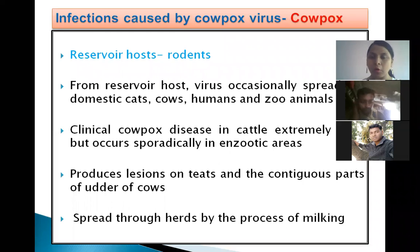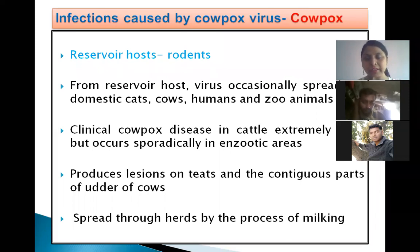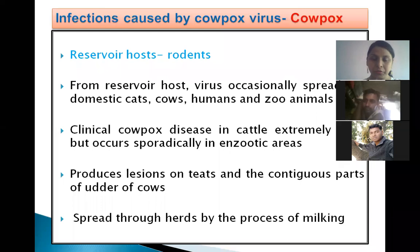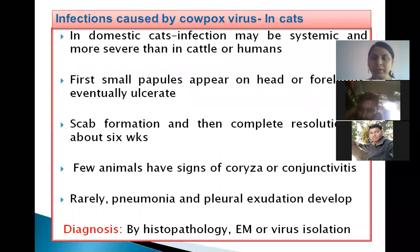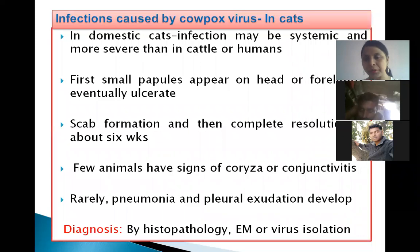The name cowpox is somewhat misleading because cowpox virus infection in cattle is completely rare or extremely rare. But sporadically it can occur in enzootic areas, producing lesions on the teats and the adjacent part of the udder. It can spread to other animals in the herd through the process of milking. Cowpox virus infection in cats is rather more severe than in cattle, and in humans the infection may be systemic.